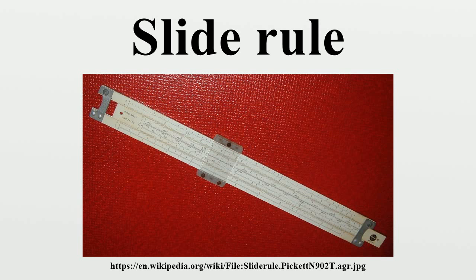Circular slide rules are mechanically more rugged and smoother moving, but their scale alignment precision is sensitive to the centering of a central pivot. A 0.1-millimetre off-centre pivot can result in a 0.2-millimetre worst-case alignment error, though the pivot does prevent scratching of the face and cursors. The highest-accuracy scales are placed on the outer rings. Rather than split scales, high-end circular rules use spiral scales for more complex operations like log-of-log scales. One 8-inch premium circular rule had a 50-inch spiral log-log scale. The main disadvantages of circular slide rules are the difficulty in locating figures along a disc and a limited number of scales, and less important scales closer to the centre have lower precision.